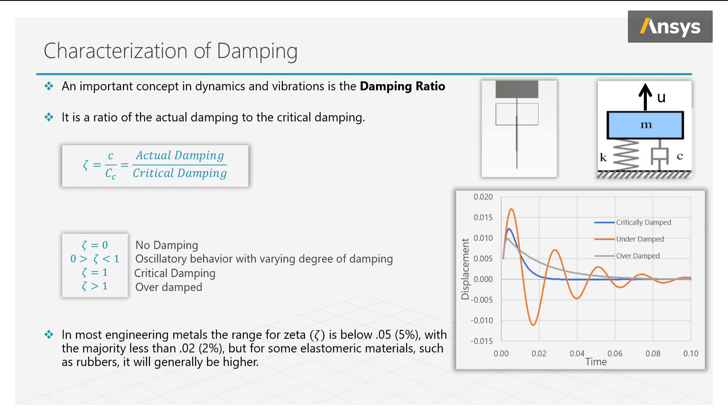Finally, we have the case where the damping ratio is greater than 1, which is overdamped. And again, we see the non-oscillatory behavior and increasing the damping ratio increases the time it takes for the system to reach equilibrium.